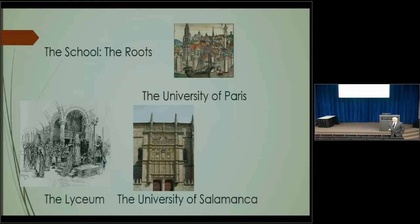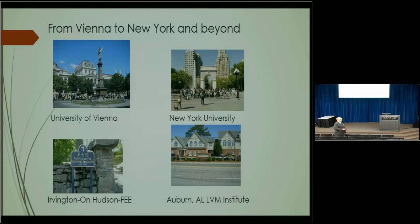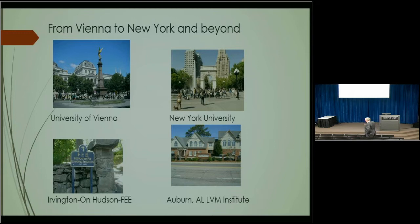The roots of the Austrian school go back to the University of Paris in the 1200s — we could trace it back even to Aristotle in Greece, and then to the University of Salamanca in Spain in the 1500s. The Austrian scholars later traveled from Vienna — they were on the Nazi hit list — and eventually settled in New York. Key institutions include the Foundation for Economic Education (FEE) and the Mises Institute in Alabama.